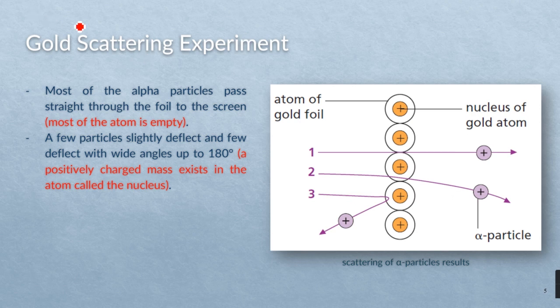Now the results of this experiment was that most of the alpha particles that would pass through away from the center or the nucleus of the gold foil will continue their journey traveling in a straight line.